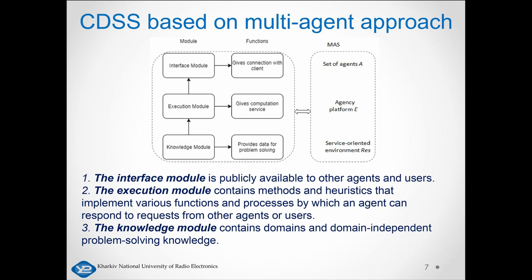The general structure of the multi-agent clinical decision support system for diagnosing diseases is shown on slide 7 and consists of three high-level modules: an interface module, an execution module, and a knowledge module with multi-agent system.